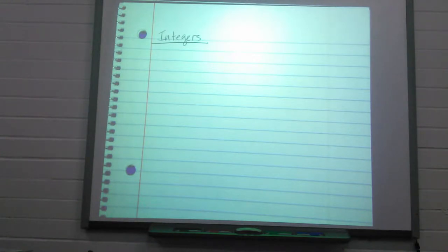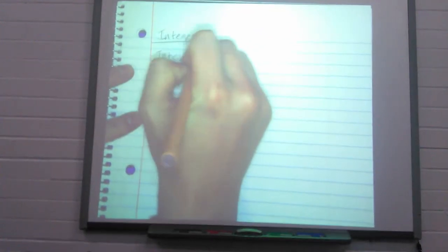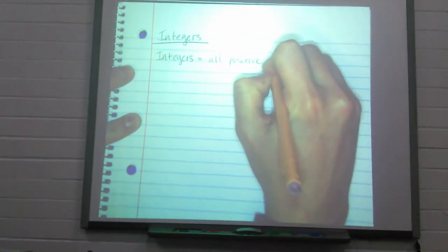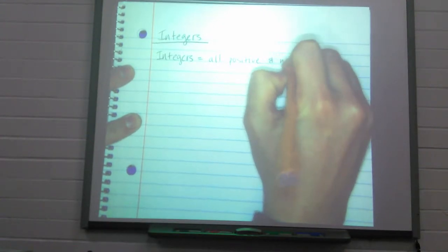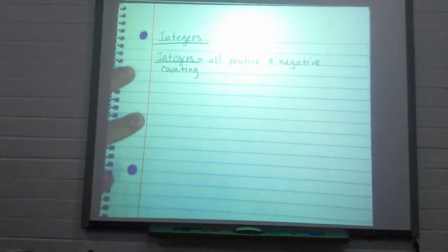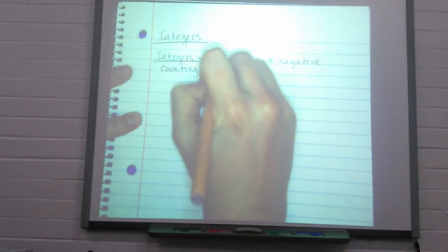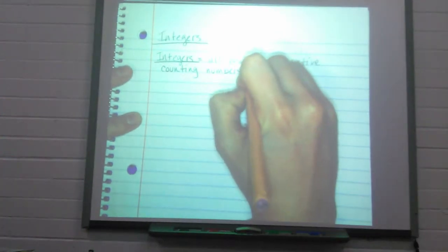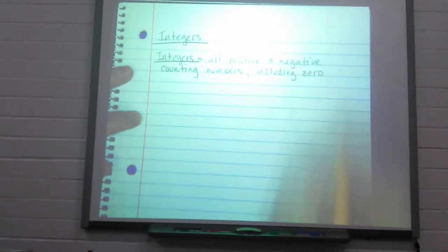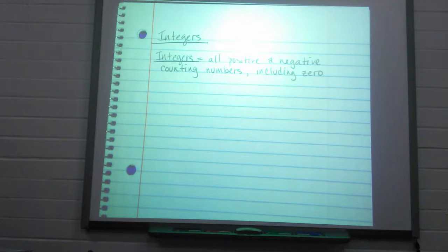Let's start by defining what exactly is an integer. Integers are all positive and negative counting numbers, including zero. Integers must also be whole numbers — they can't be fractions and they can't be decimals.